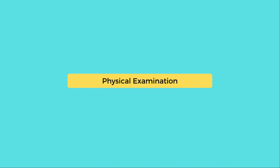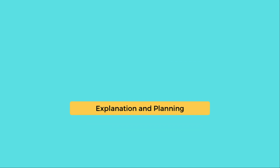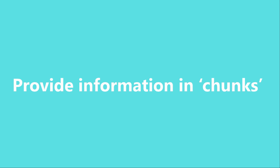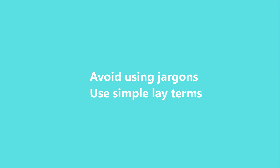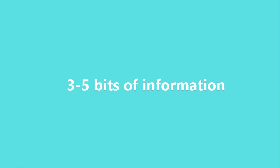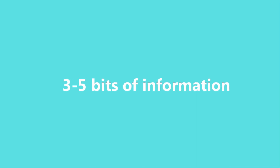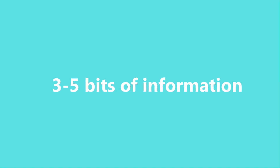The third stage consists of the physical examination. It is important to gain informed consent and offer a chaperone if needed. The fourth stage is explanation and planning. Provide information in chunks rather than in great detail all at once. Check the patient's understanding throughout so both parties are on the same page. Use written or diagrammatic information to clarify explanations where appropriate. Avoid jargon and use simple lay terms. Typically, provide three to five pieces of information and then check with the patient before moving forward.